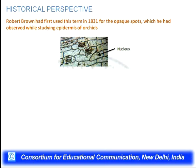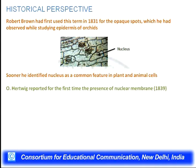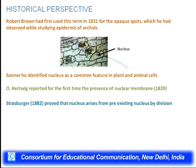Let's have a brief historical perspective on the discovery of the nucleus. Robert Brown was the first person to use the term 'nucleus' in 1831 for the opaque spots he observed while studying the epidermis of orchids. He identified the nucleus as a common feature in plant and animal cells. O. Hertwig then reported for the first time the presence of a nuclear membrane, defining the nucleus as an entity separated from the cytoplasm by a nuclear envelope.